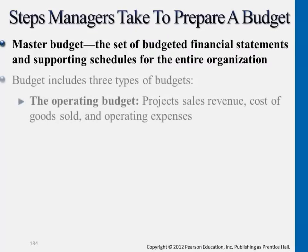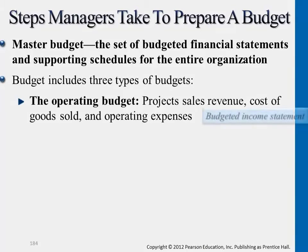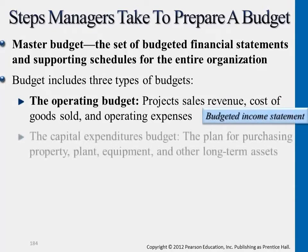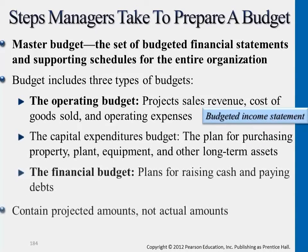Let's take a look at the detailed components of a budget. We usually break down the master budget into three main categories. We have operating budget as the first bullet point. Second, we have capital expenditures budget, which we actually covered in the entire previous chapter — the 21st chapter is all about capital expenditure budget.